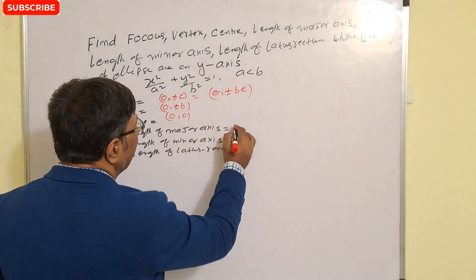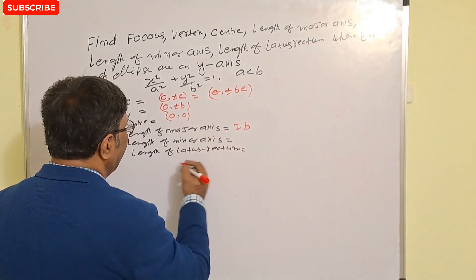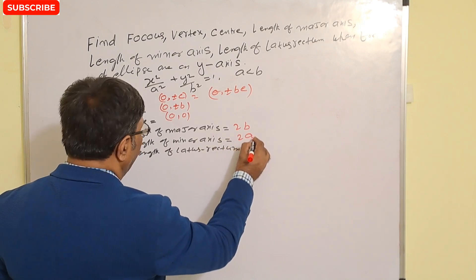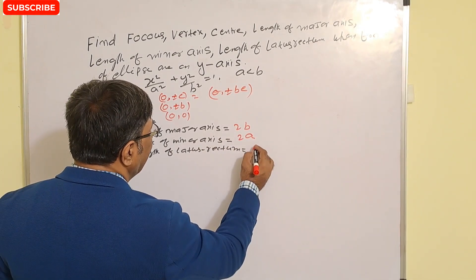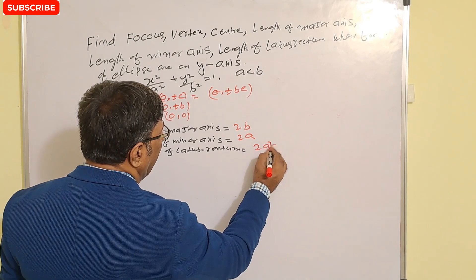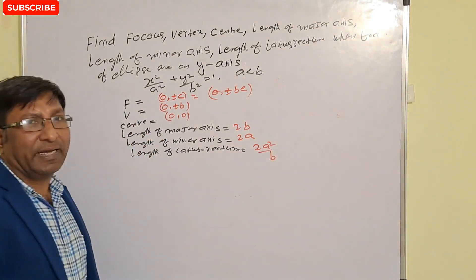Length of major axis will be what? 2b. Length of minor axis will be what? 2a. And length of latus rectum will be what? That is 2a² upon b. Thank you.